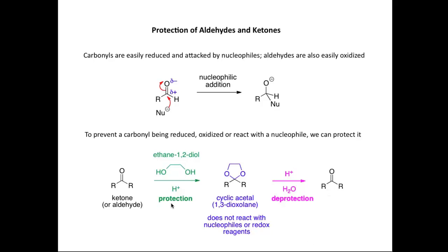Formation of the Cyclic Acetal is called a protection step. Conversion of the Cyclic Acetal back to the Ketone is called a deprotection step. I can use Ketones or Aldehydes in this transformation, so I can protect either of those functional groups.